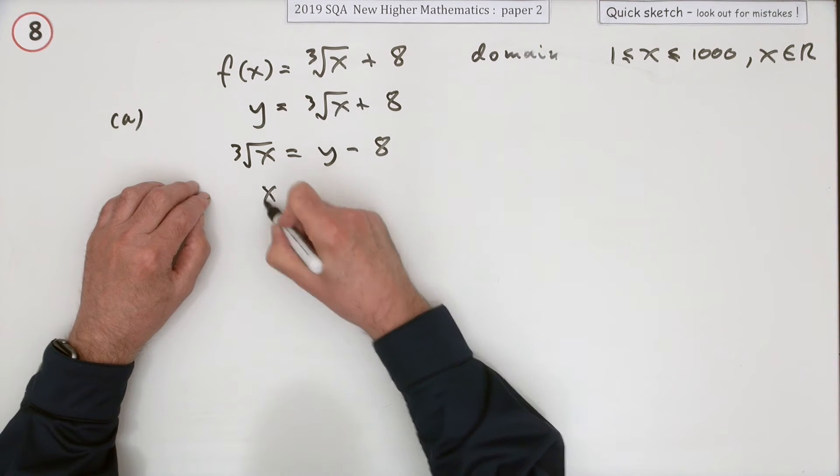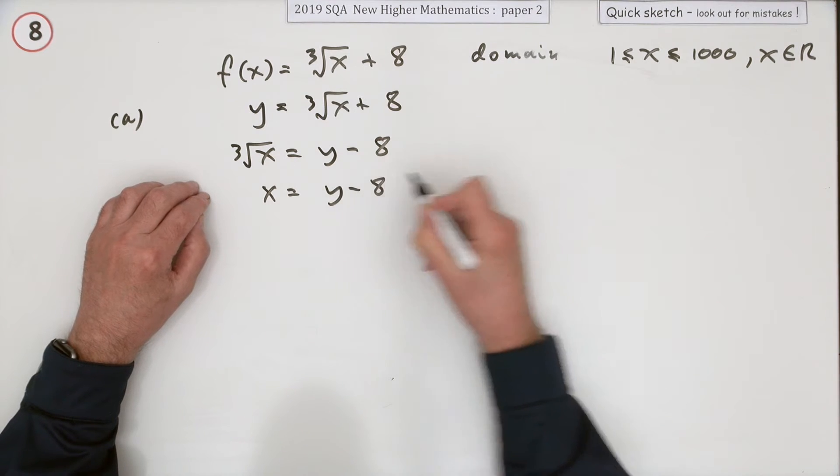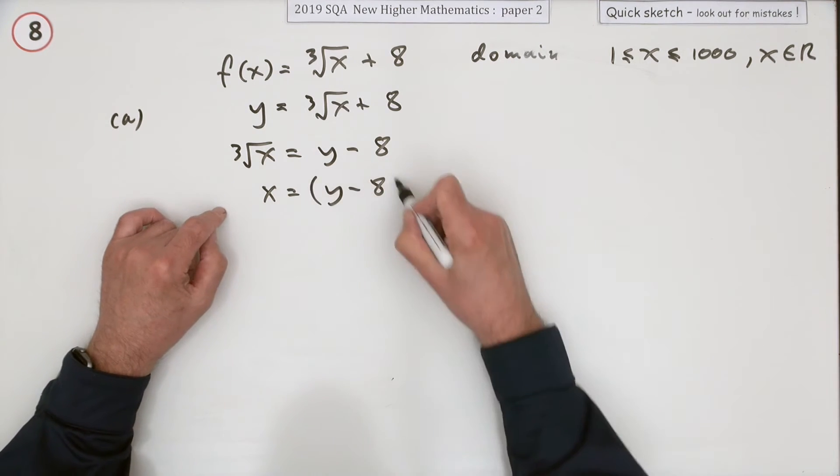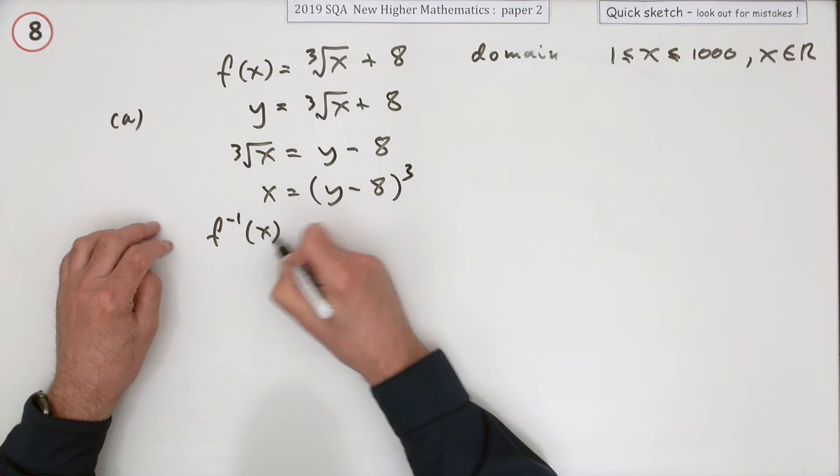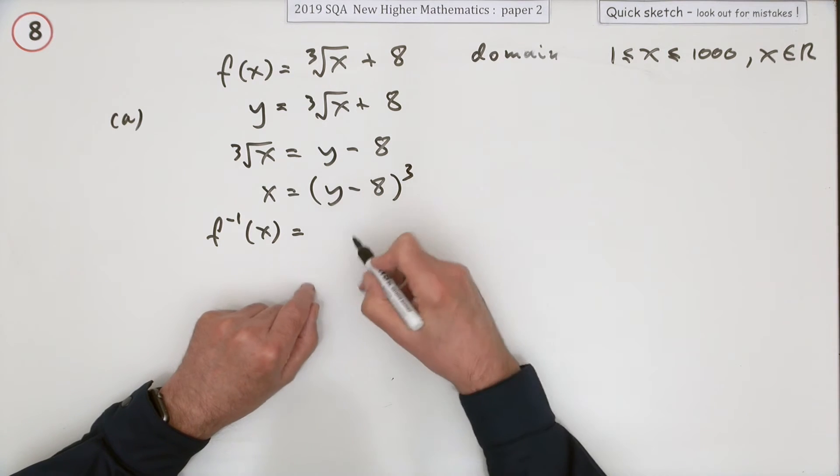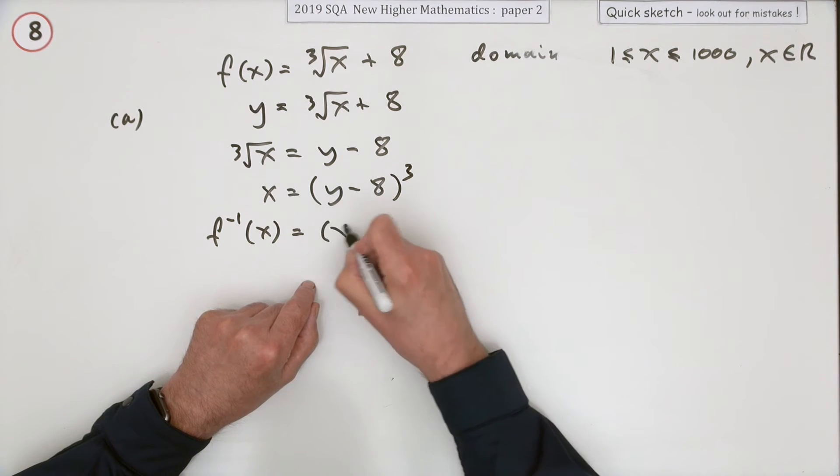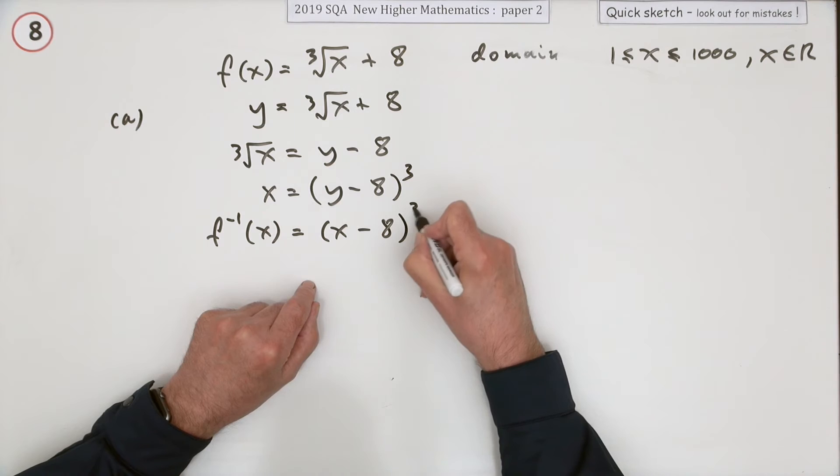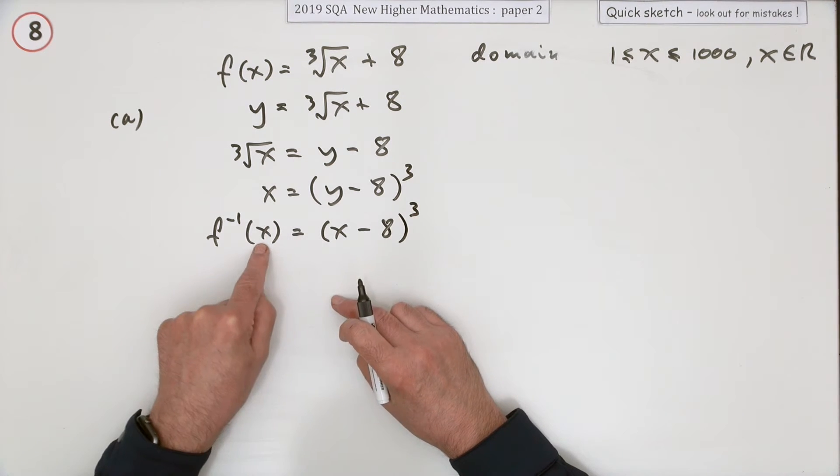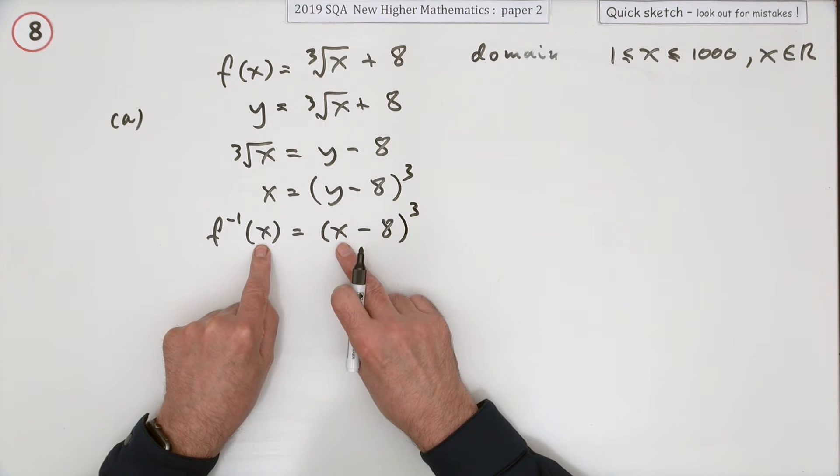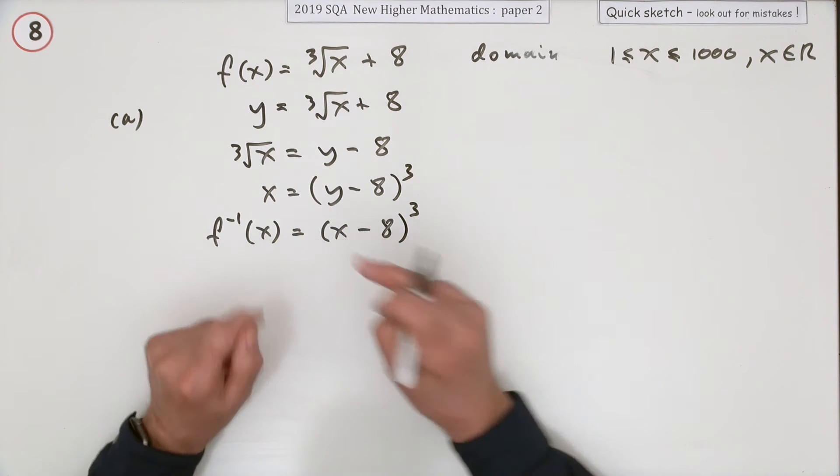So x will be y minus 8. Undo the cube root - cube that side. Then I think you're allowed in one go just to recreate the variables, calling that x. So x minus 8 cubed - it was really inverse function of y is y minus 8, but once you've got a variable there you can put any dummy letter in you like, so you could put an x in.